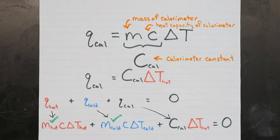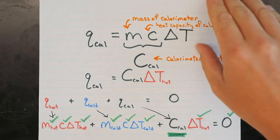We know the masses of the hot and cold water samples. We know the specific heat capacity for liquid water. We measure the temperature change of the hot and cold water. And we know that they all have to add up to zero, since energy cannot be created or destroyed. We now just solve for the calorimeter constant, and we're done.